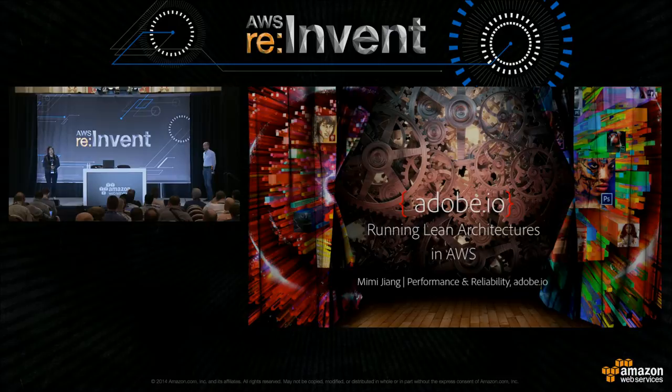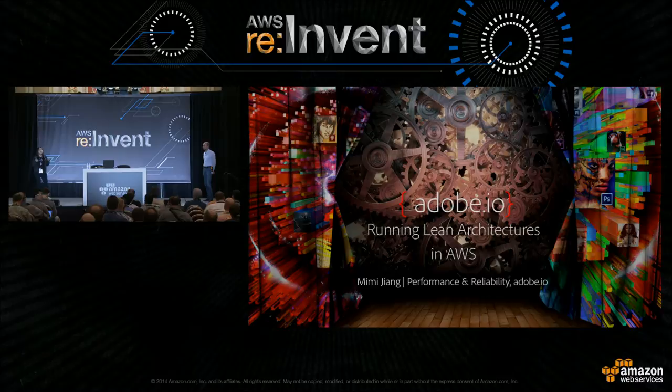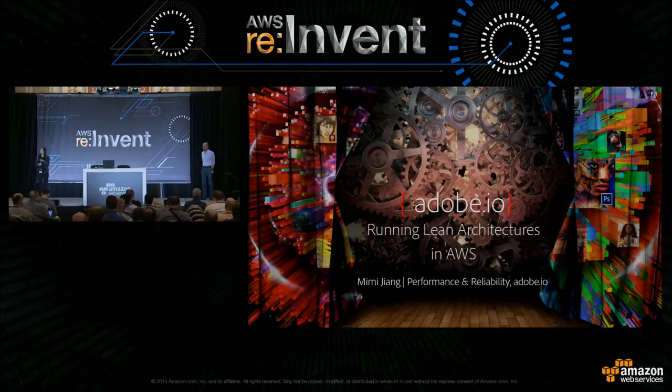Adobe is a design company and we've been moving to the cloud. One thing we really like about the cloud is that resources are available on demand — just as Constantine pointed out, it's like a light switch. You can turn it on when you need it or turn it off when you're done with it. I'm going to talk about techniques our API platform team has used to optimize costs in AWS.